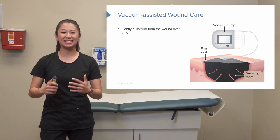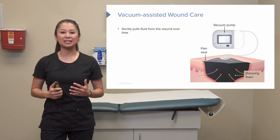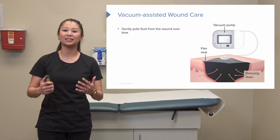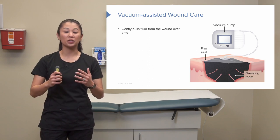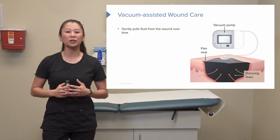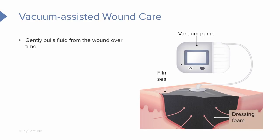This is called vacuum assisted wound care — many times you'll see this in your clinical setting and we typically call it a wound vac. There is a vacuum or suction component to this treatment. The dressing foam, the black piece, is a dense black foam. We cut this to the size of the wound and it sets inside the wound like a filter, helping pull extra fluid through it to the pump itself.